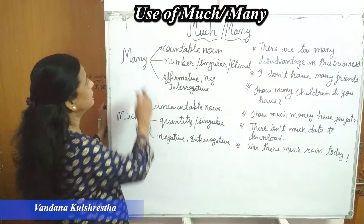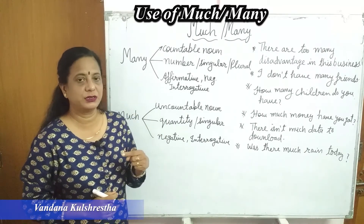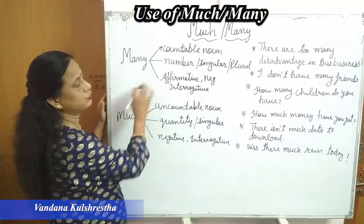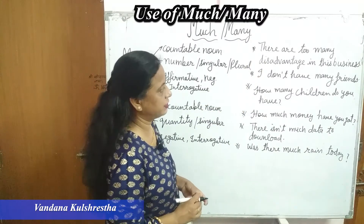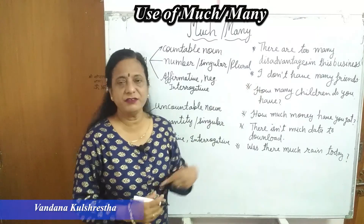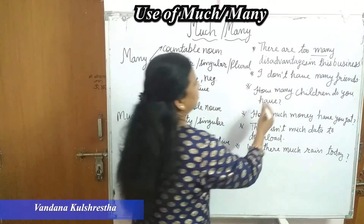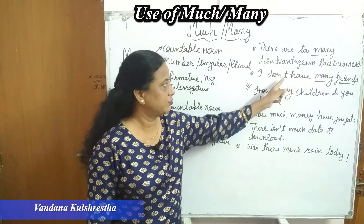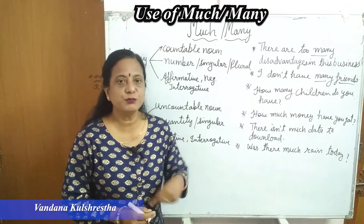Many is used for countable nouns. It questions about quantity — agar hum many ka use karte hain toh question mein use kiya jata hai for the countable noun. Now see the examples: 'There are too many disadvantages in this business.' Disadvantages — because many is there, toh disadvantage ko we can count. 'I don't have many friends.' Friends jo noun hai usko hum count kar sakte hain. So this is a negative sentence.